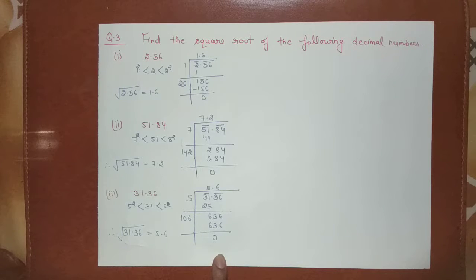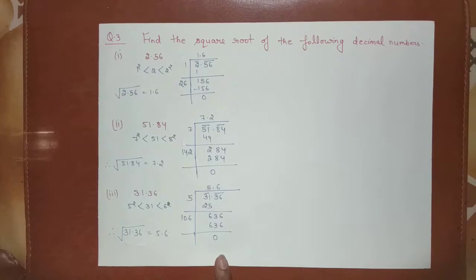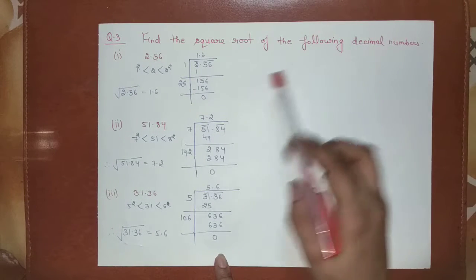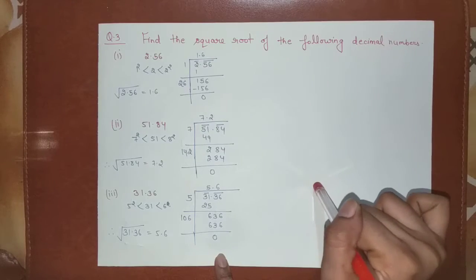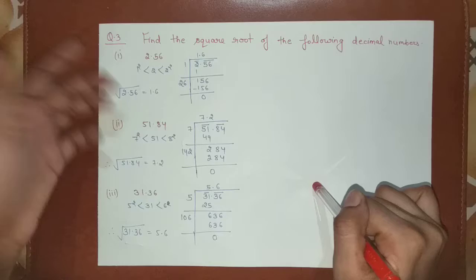Now we have to find the square roots of the following decimal numbers. We have to find out the square root of decimal numbers by division method. So we have here 2.56. Same as it is easy.